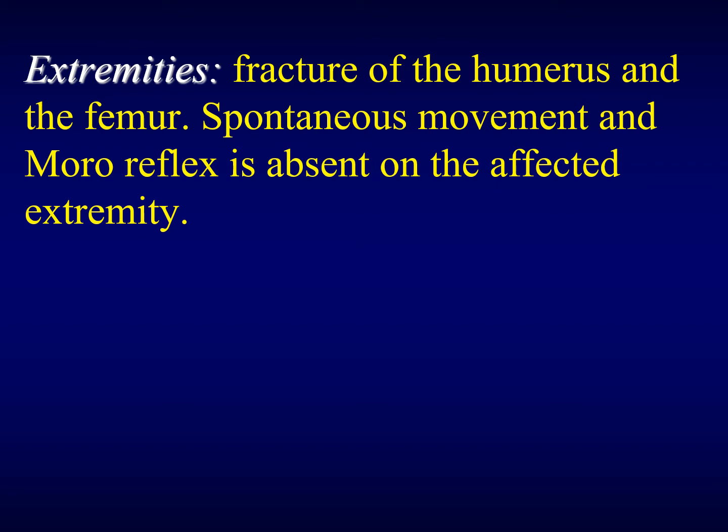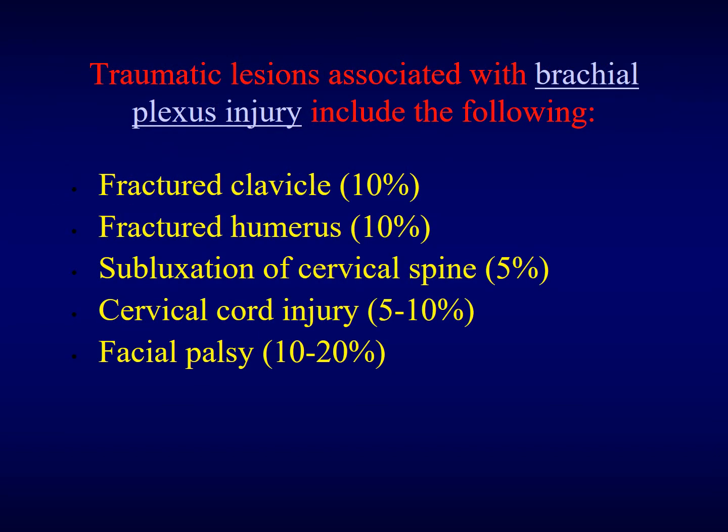Fractures of the humerus and the femur may also happen. We find that the Moro reflex is absent on the affected extremity. Traumatic lesions associated with brachial plexus injury include fracture of the clavicle in 10% of cases, fracture of the humerus, subluxation of the cervical spine, cervical cord injury, and facial palsy.